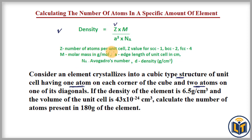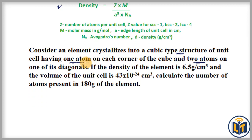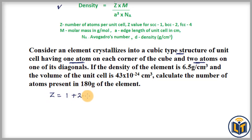From this information we can find out the Z value. Z value is the number of atoms per unit cell. We have one atom on each corner and two atoms on one of its diagonals, so the total number of atoms per unit cell is Z = 3. This is how we got the Z value.